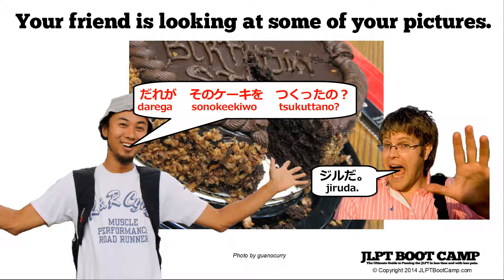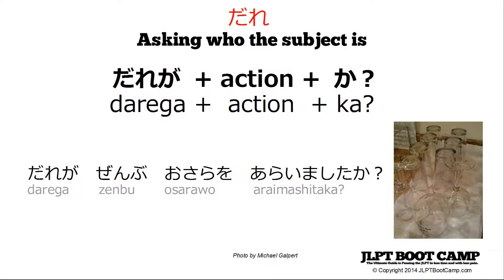This is a very common pattern — of course, you want to know who did something. The structure is 'dare ga,' some kind of action, plus 'ka.' Another example in polite form would be 'dare ga zenbu osara o araimashita ka' — who washed all the dishes? This is in polite form; you just add 'ka' to the end of the sentence.